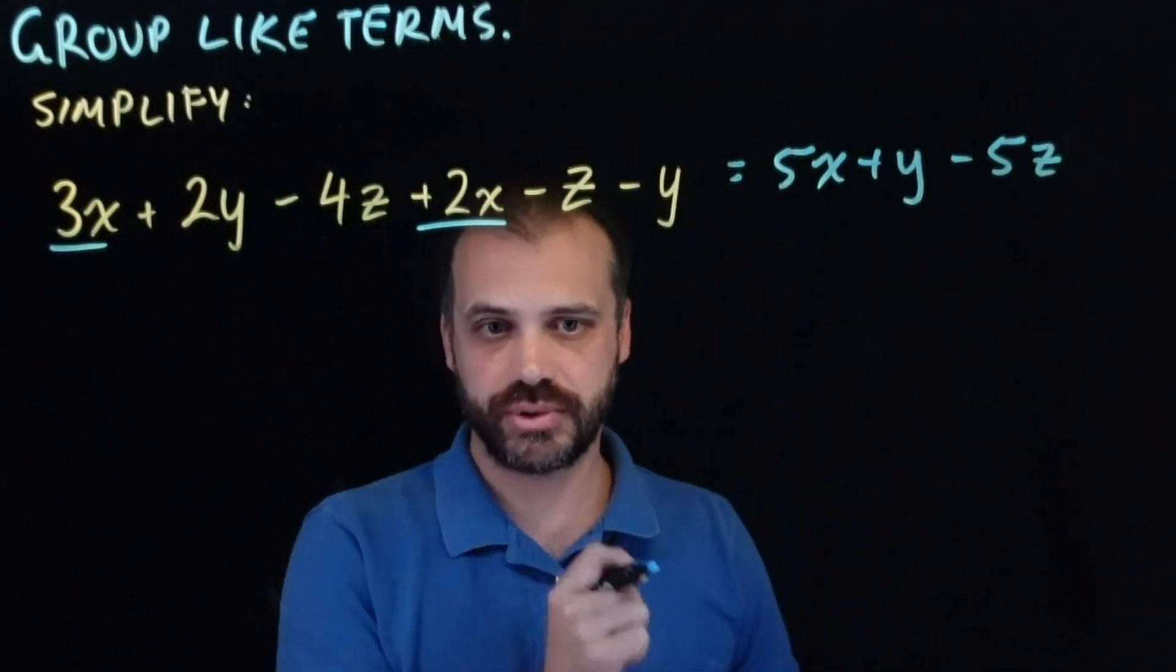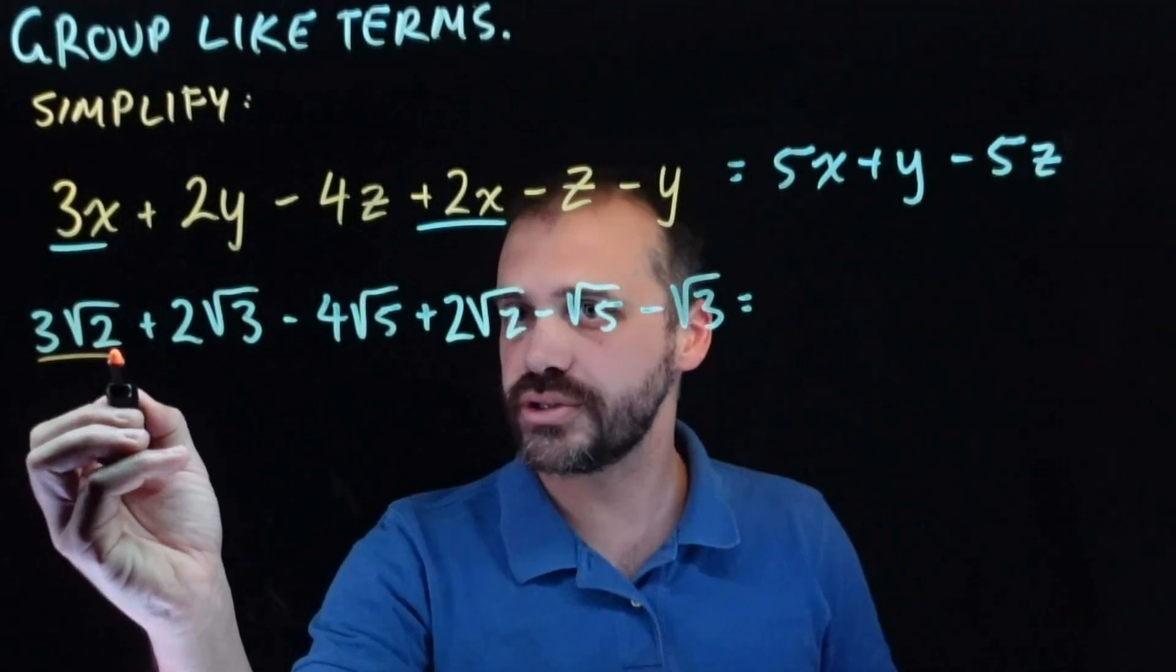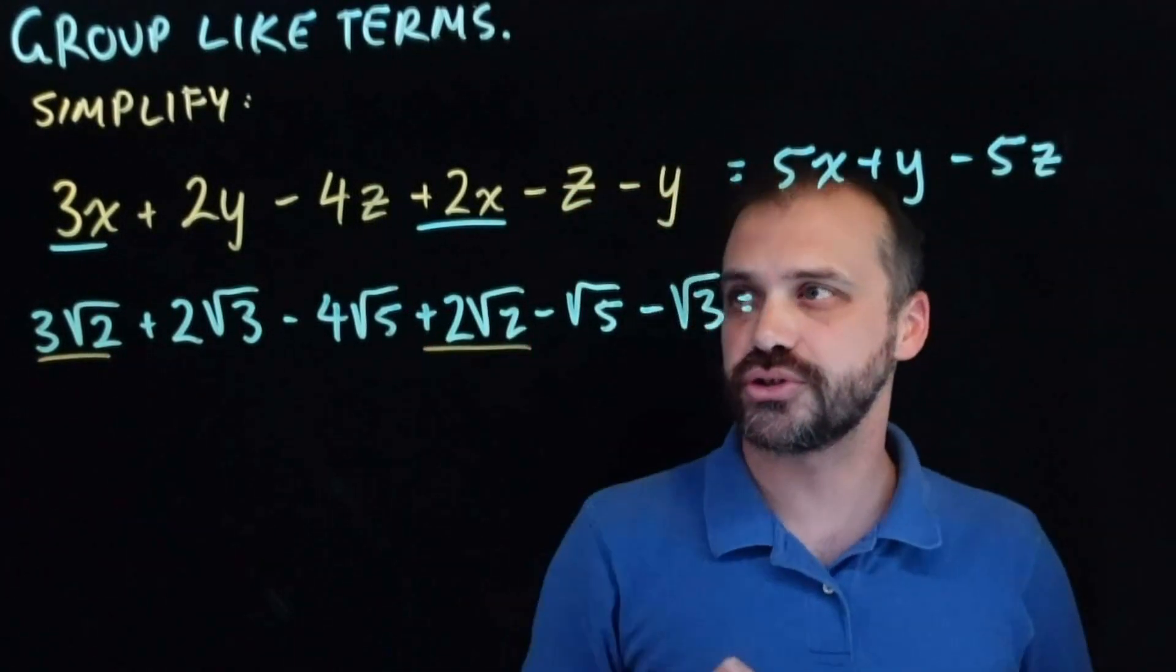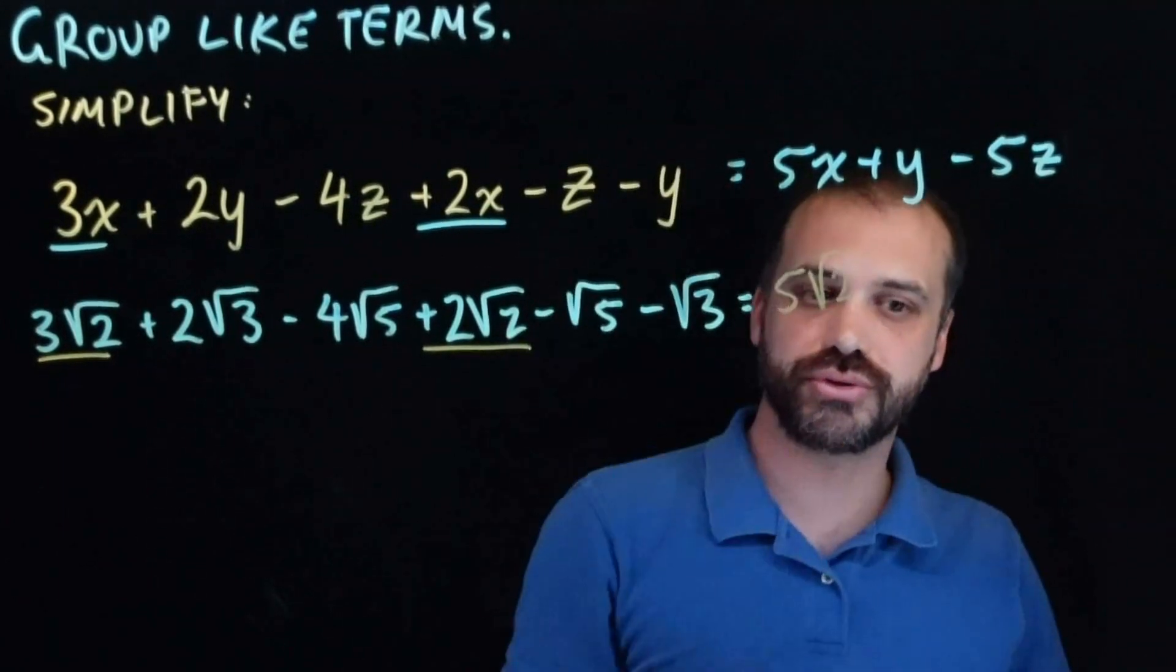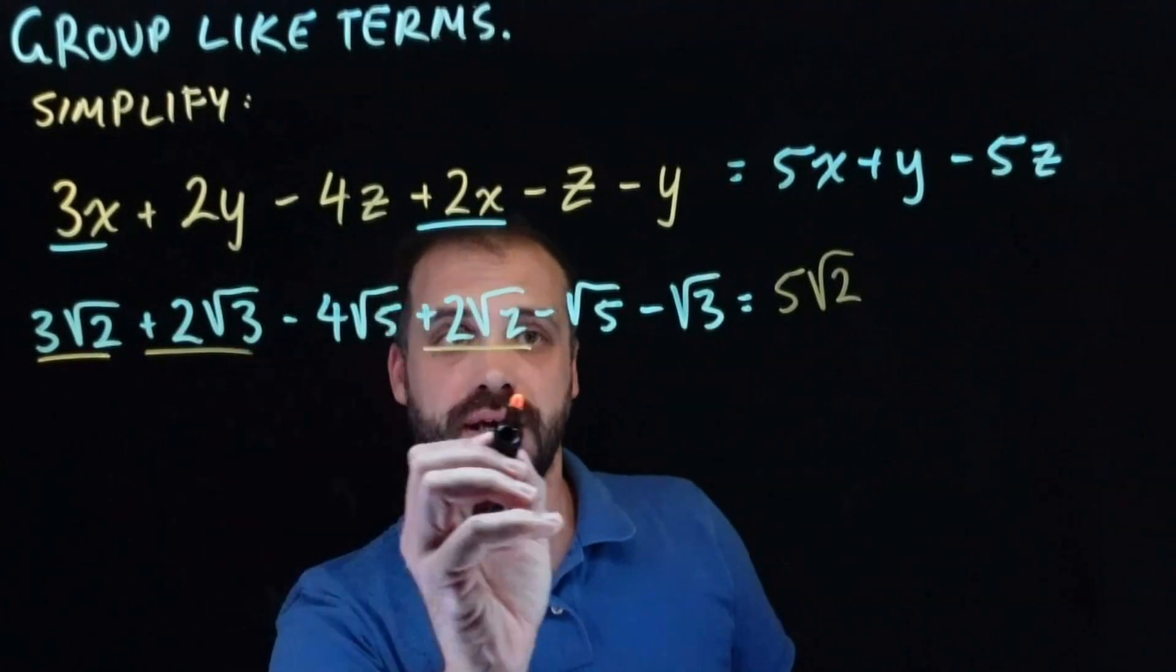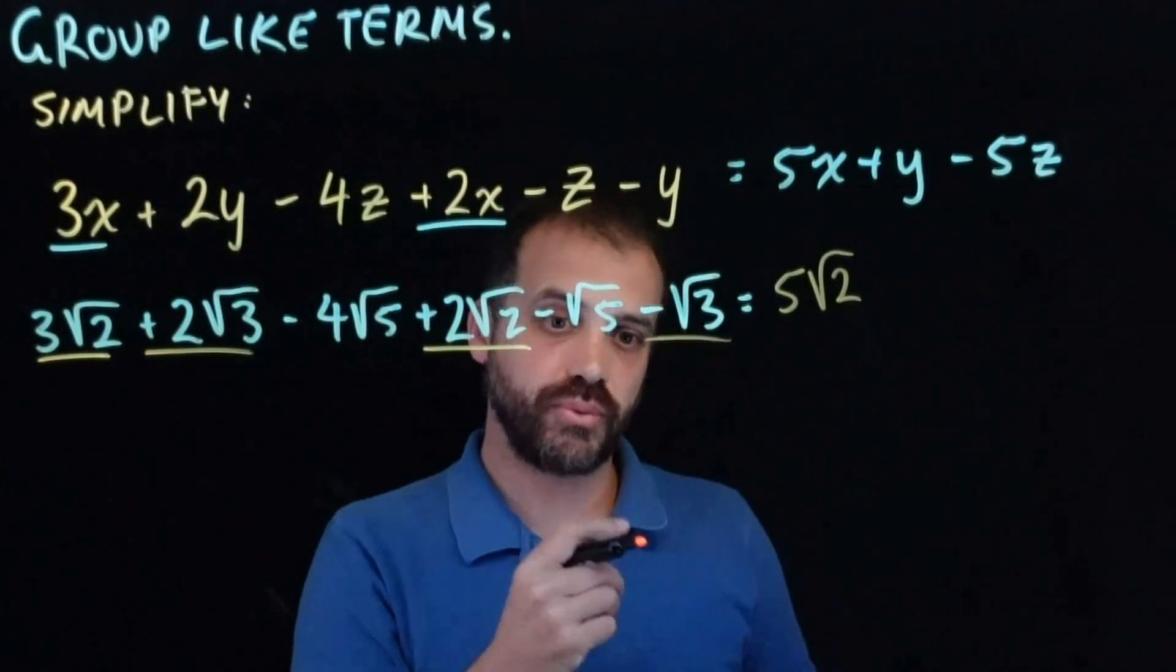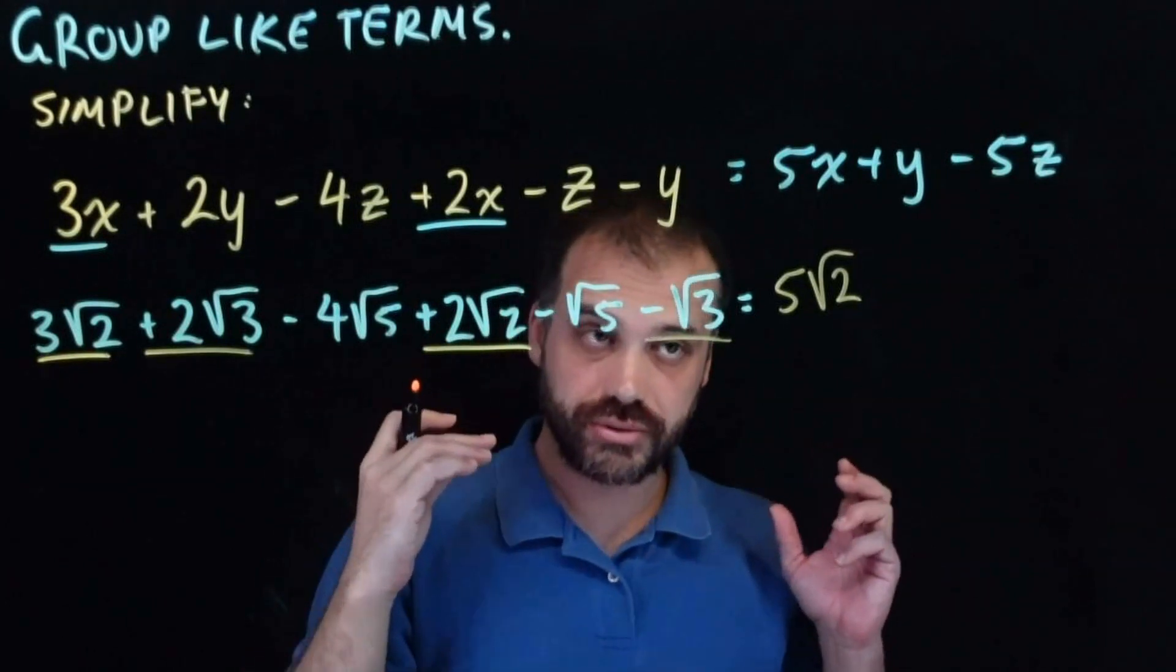We're going to do the same thing with surds. So here we have 3 root 2s and 2 root 2s. So that is 5 root 2s, and here we have 2 root 3s and negative 1 root 3. So 2 root 3 minus 1 root 3 is root 3.